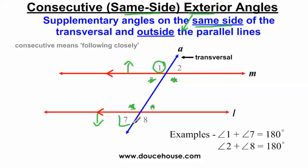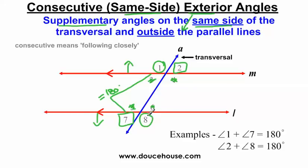Looking at angle 1, the other angle on the same side of the transversal that's outside the parallel lines is angle 7. So angle 1 and angle 7 are an example of consecutive exterior angles — they equal 180 degrees because that's what supplementary angles add up to. On the other side of the transversal, angle 2 and angle 8 are another example of consecutive or same-side exterior angles, both outside the parallel lines and on the same side of the transversal, so they also equal 180 degrees.